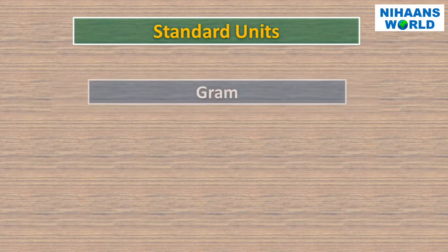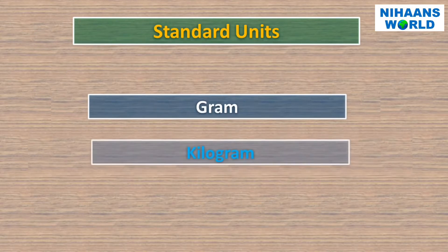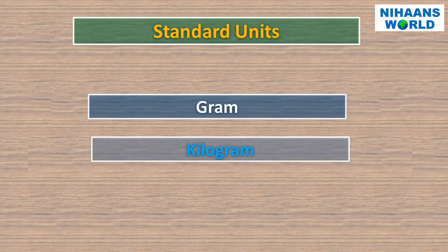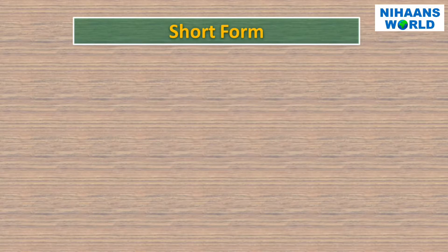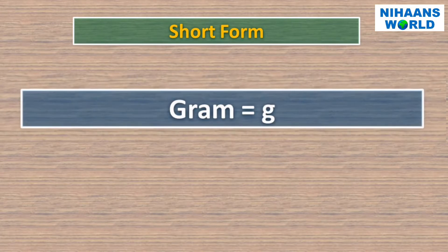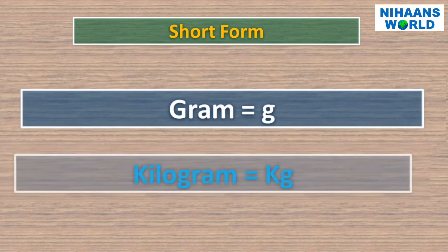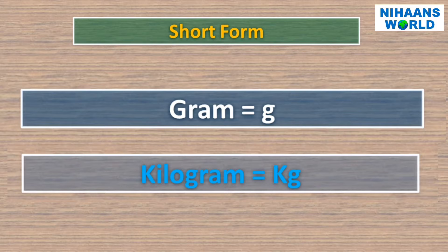Gram and kilogram are standard units used to measure weight. The short form of gram is g, and the short form of kilogram is kg.